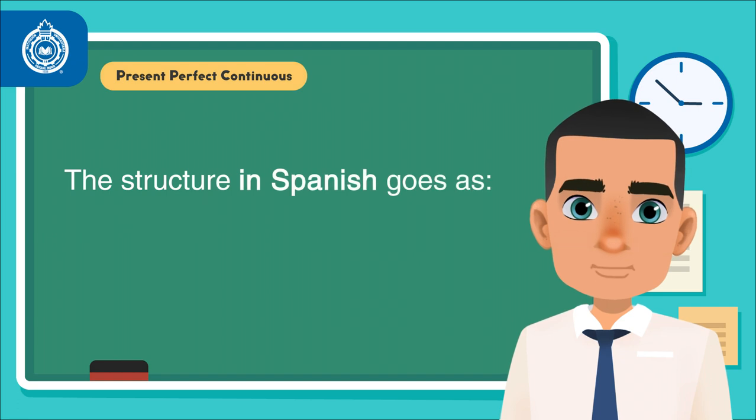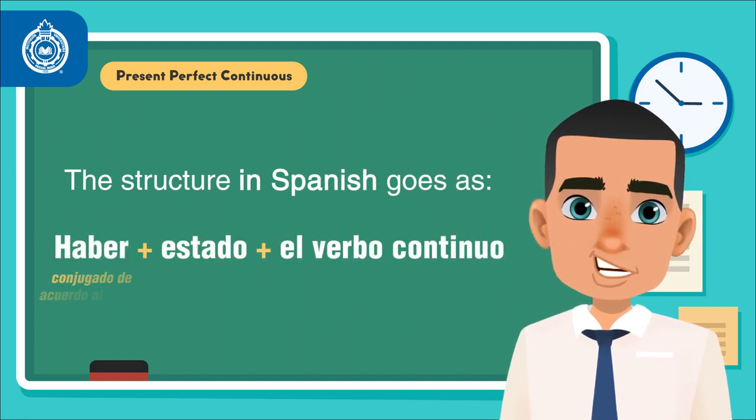Now, the structure in Spanish goes as haber conjugado de acuerdo con el sujeto, más estado, el participio pasado de estar, más el verbo continuo, ando, endo.